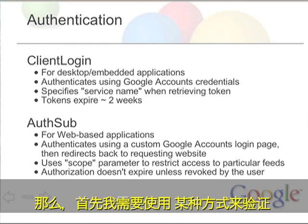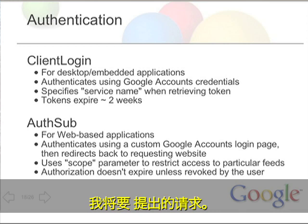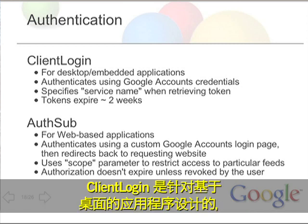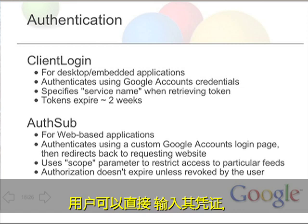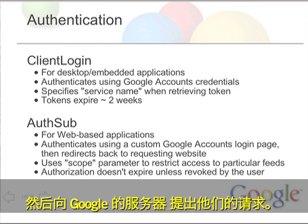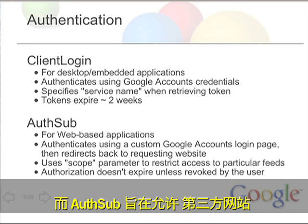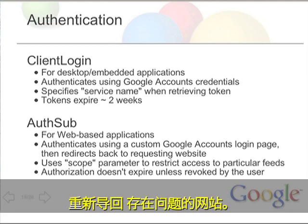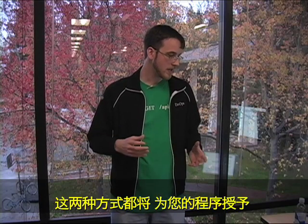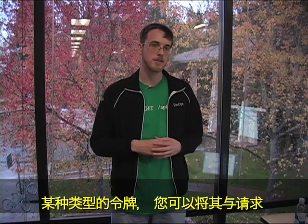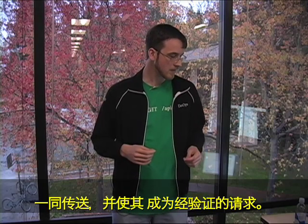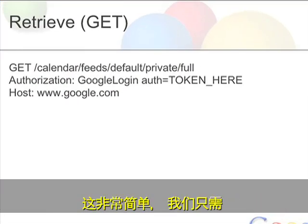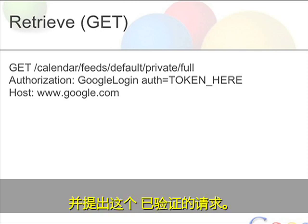First, I need some way of authenticating the request I'm going to be making. I have two options here: AuthSub and ClientLogin. ClientLogin is meant for desktop-based applications that can have the user input their credentials directly and then make the request to Google's servers. Whereas AuthSub is intended to allow third-party websites to redirect users to Google's login page and then redirect back to the website in question. Both of these give your program some kind of token that you can pass along with your request to make it an authenticated request.